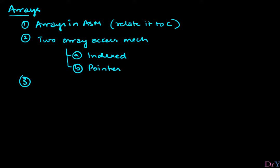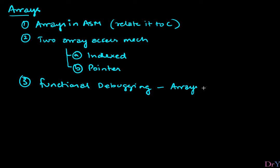The third thing is that I'm going to tie all of these together within an example of functional debugging. You will find another video in which John will explain what functional debugging is. What we're going to do here is use arrays as a debugging instrument — collecting data in an array that will tell me whether the code is doing what it's intended to do.